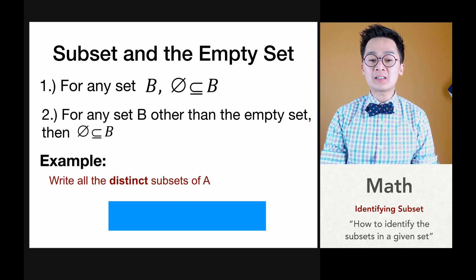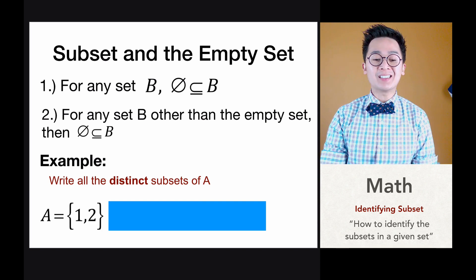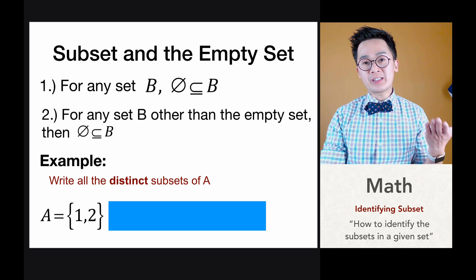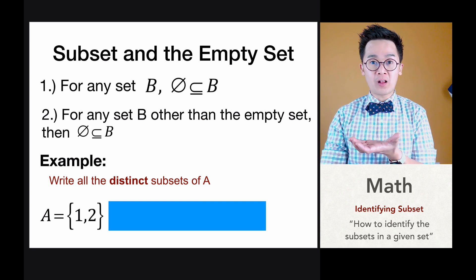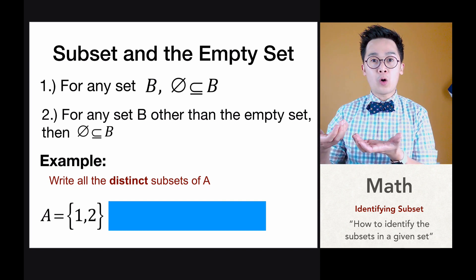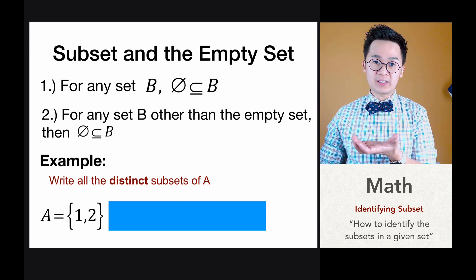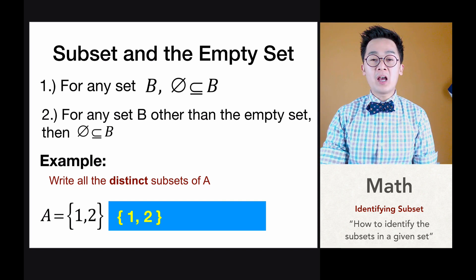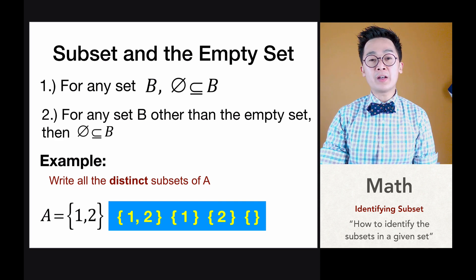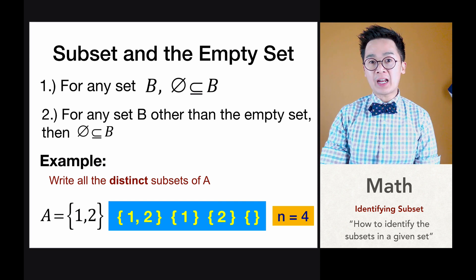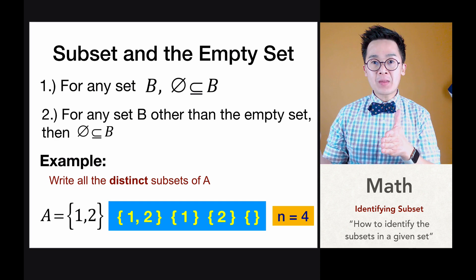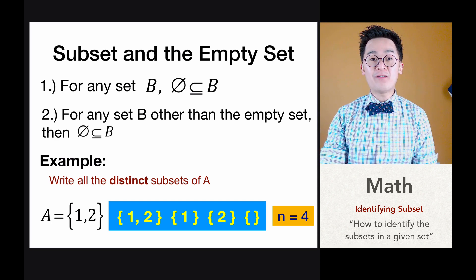Let's say we need to write all the distinct subsets of set A, where set A is given by {1, 2}. Set A has elements 1 and 2. If we're going to write all the distinct subsets of A, we can have {1, 2} as a subset, or all the elements. We can also have subset {1} or subset {2}, and the null set, because the null set is always included. So all distinct subsets of A would be {1, 2}, {1}, {2}, and the null set — four subsets in total, even though it only has two elements.